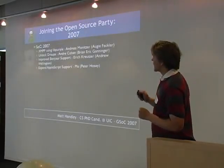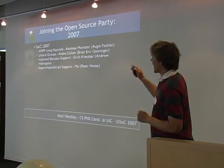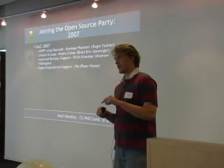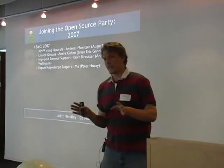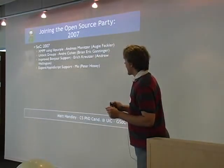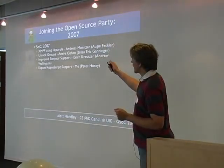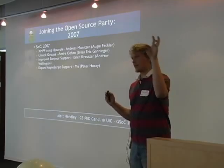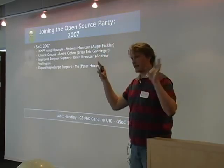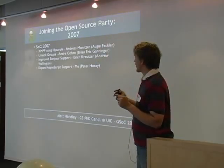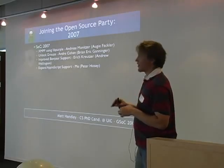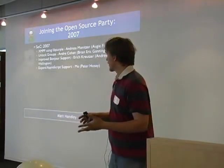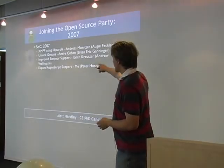In 2007, Summer of Code came along and they re-implemented all the Java stuff in libpurple — now the official new name of libgaim. They added the ability to collapse groups, which is a really handy feature, as well as nice Bonjour support for chatting with people on your local network.